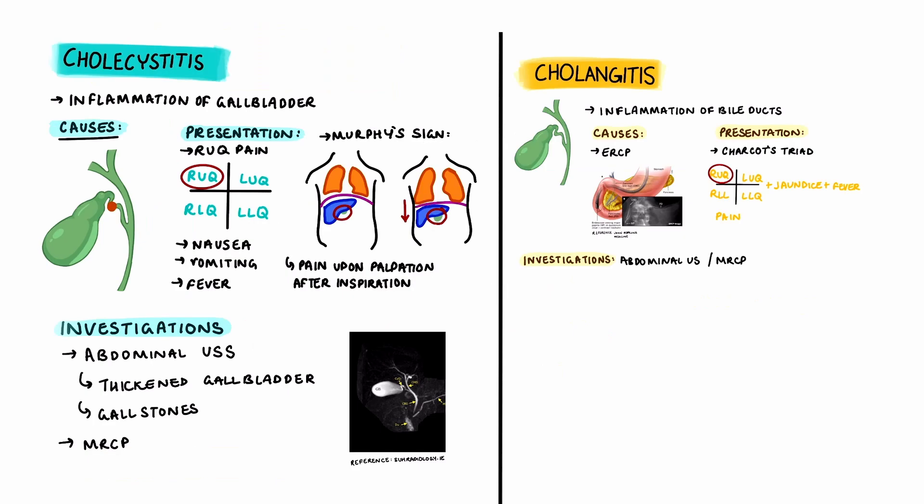To summarize: cholecystitis is the inflammation of the gallbladder whereas cholangitis is inflammation of the bile ducts. For presentation, cholecystitis uses the Murphy's sign whereas cholangitis uses Charcot's triad. The investigations are very similar for both pathologies, using abdominal ultrasound and MRCP.